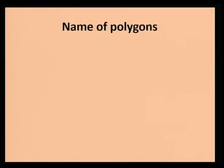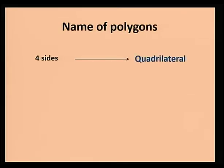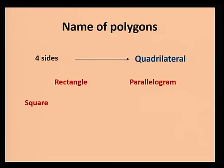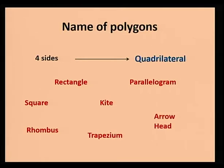Now, let's move on to polygons with four sides. A polygon with four sides is called a quadrilateral. We have different types of quadrilaterals, namely, square, rectangle, parallelogram, kite, rhombus, trapezium, and arrowhead. Let's have a look at these quadrilaterals one by one.